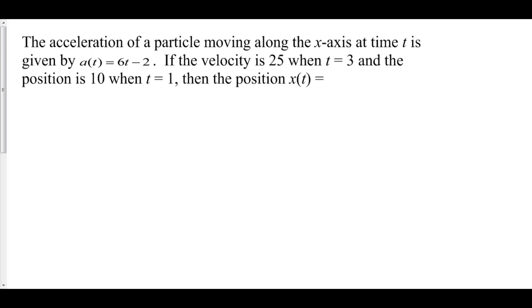The acceleration of a particle moving along the x-axis at time t is given by a(t) equals 6t minus 2. If the velocity is 25 when t equals 3 and the position is 10 when t equals 1, then let's find our position function.